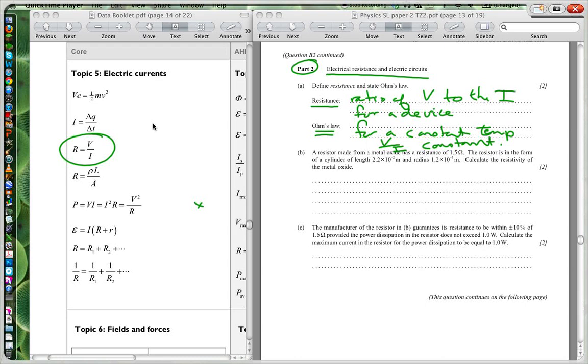Okay now in the next question it says here a resistor made from a metal oxide has a resistance of 1.5 Ohms. The resistor is in the form of a cylinder of 2.2 times 10 to the negative 2 meters and a radius of 1.2 times 10 to the minus 3 meters. Calculate the resistivity of the metal oxide.